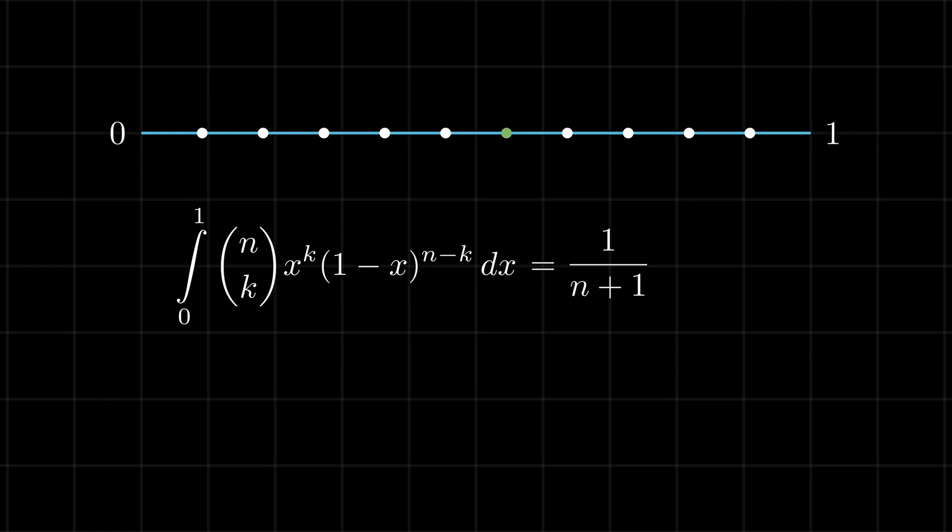Because we have calculated the same probability in two different ways, they should be equal. Therefore, we see that we have solved this integral without using any calculus at all.